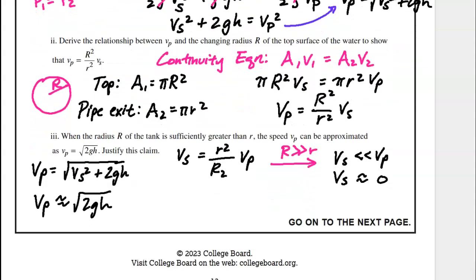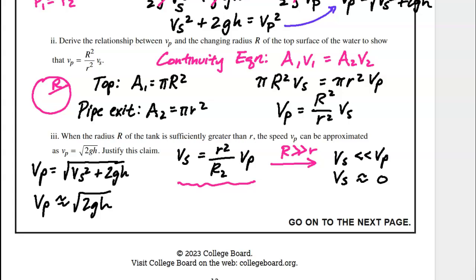When the radius R of the tank is sufficiently greater than r, the speed VP can be approximated as VP equals the square root of 2gH. To justify this, we solve the continuity result for VS: VS equals r²/R² times VP. Since R is much greater than r, the fraction r²/R² becomes very, very small, meaning VS is approximately zero. Substituting VS ≈ 0 into VP = sqrt(VS² + 2gH) gives VP ≈ sqrt(2gH).